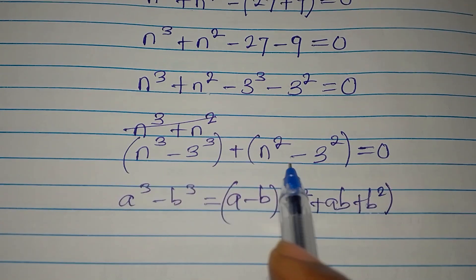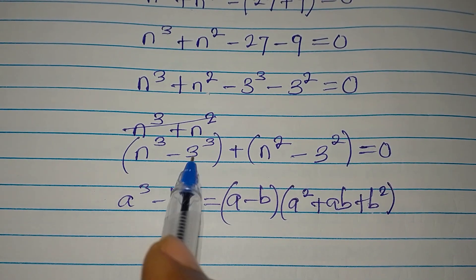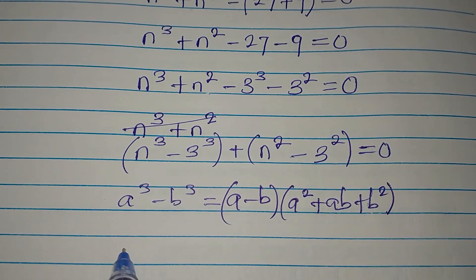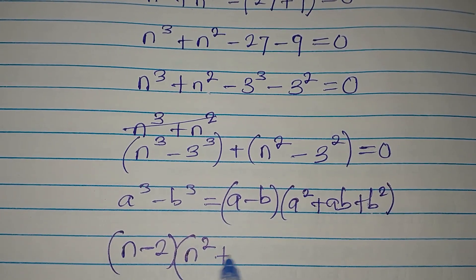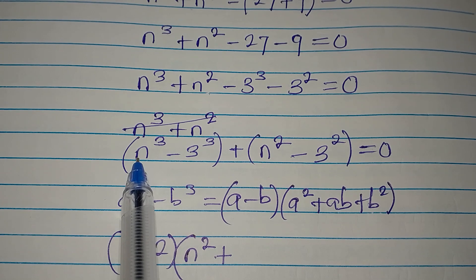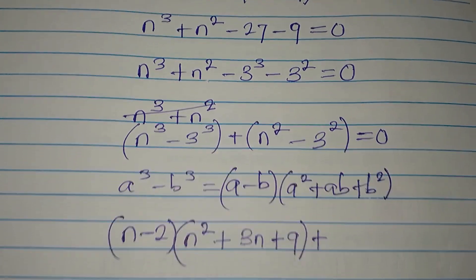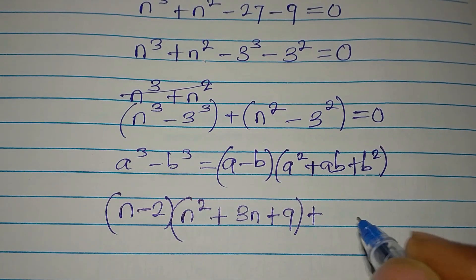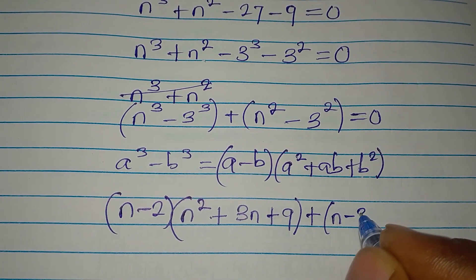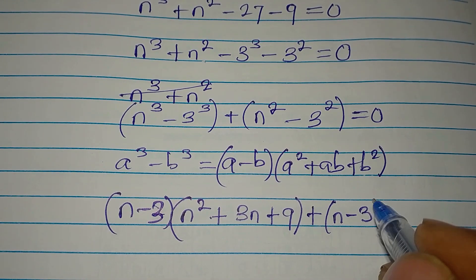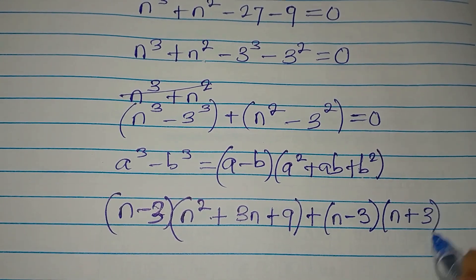And then you know the regular difference of two squares formula. So now the difference of cubes part will be written as: a minus b becomes n minus 3, into a squared which is n squared, plus ab which is n times 3 giving 3n, then plus b squared which is 3 squared giving 9. Then for the difference of two squares, we have n minus 3 into n plus 3.